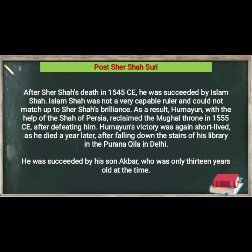Moving ahead to post Sher Shah Suri: after Sher Shah's death in 1545 CE, he was succeeded by Islam Shah. Islam Shah was not a very capable ruler and could not match up to Sher Shah's brilliance. As a result, Humayun, with the help of the Shah of Persia, reclaimed the Mughal throne in 1555 CE. However, Humayun's victory was again short-lived as he died a year later after falling down the stairs from his library in Purana Qila in Delhi. He was succeeded by his son Akbar, who was only 13 years old at that time.